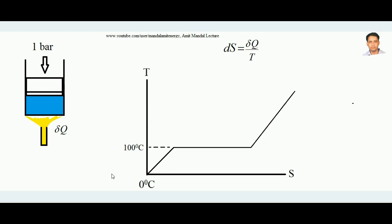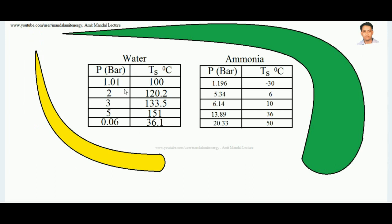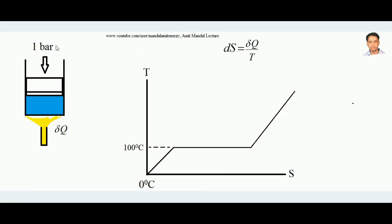As heat is added, entropy increases. At 1 bar pressure the boiling point is approximately 100°C. So from 0°C, as heat is added, both temperature and entropy rise together. The water temperature rises from 0°C and ultimately reaches its saturation temperature of 100°C for 1 bar pressure. This rising portion of the curve shows both temperature and entropy increasing simultaneously.